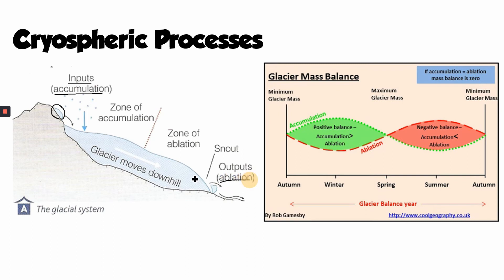The melting — or ablation — is the term we use for the loss of ice from a glacier. Ablation occurs more in summer than in winter, but can happen throughout the year. Meltwater might run off in streams and rivers from the front of the glacier, chunks of ice might break off as icebergs, and some ice might even return to the atmosphere through evaporation or sublimation.